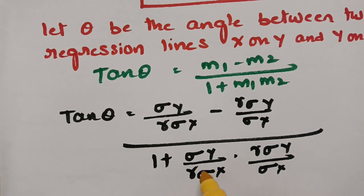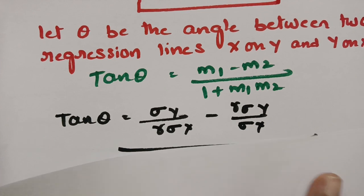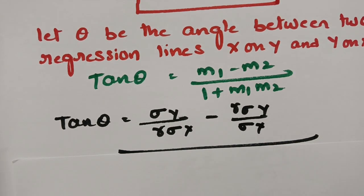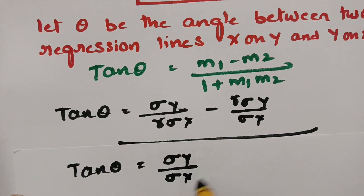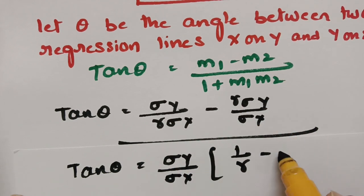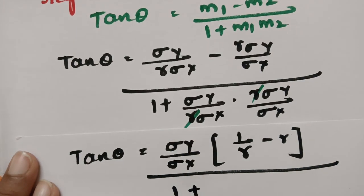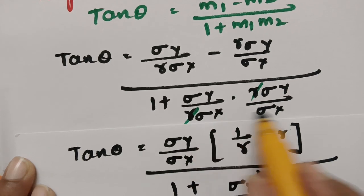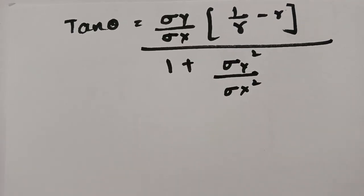Cancelling r and taking the LCM in the numerator and the denominator: sigma y over sigma x appears in both places. Taking sigma y over sigma x common in the numerator leaves 1/r minus r, and in the denominator we get 1 plus sigma y² / sigma x². Multiplying through gives sigma x² in the denominator, and we are ready to calculate the tan θ value.